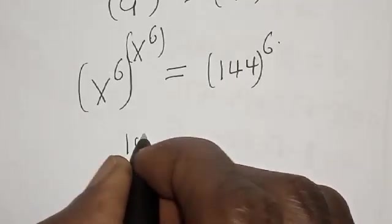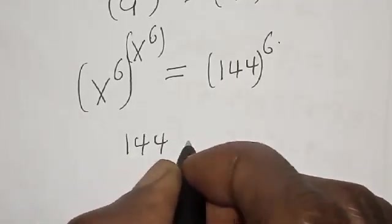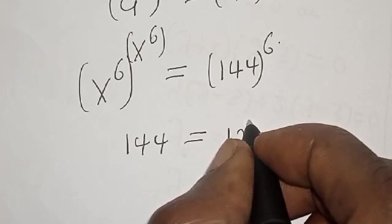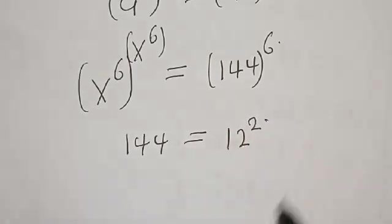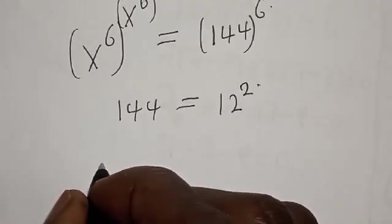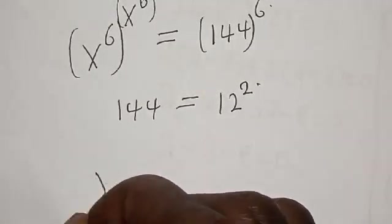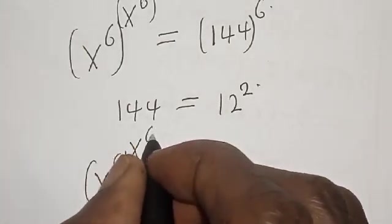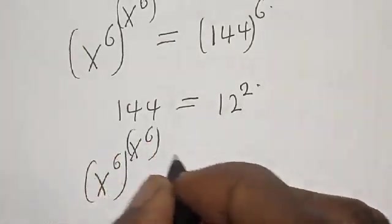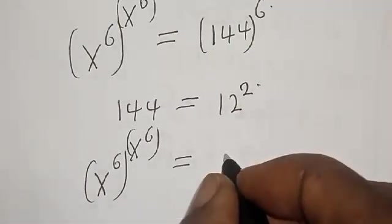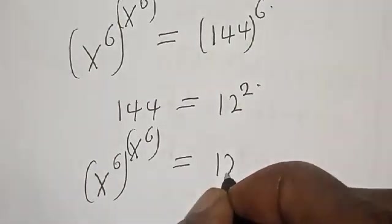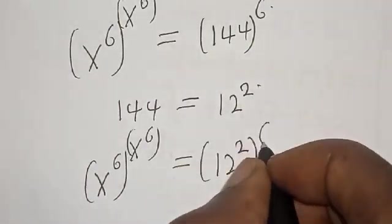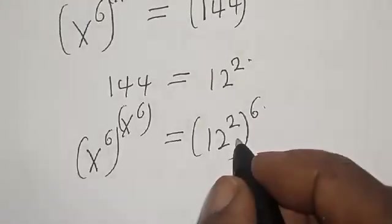Now remember that 144 is equal to 12 squared. Then s raised to power of six, raised to power of s raised to power of six, is equal to 12 squared raised to power of 12 squared, raised to power of 12 squared raised to power of six.